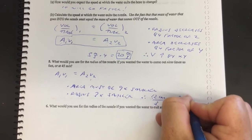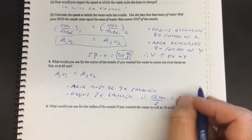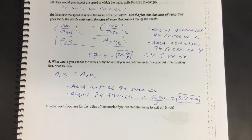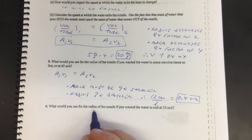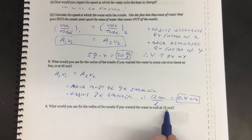And then you want the new radius to be zero point four centimeters. So that's just a nice quick way, it's just a nice quick way to do it. Final one here, it says now if you want the water to exit at 10 meters per second...